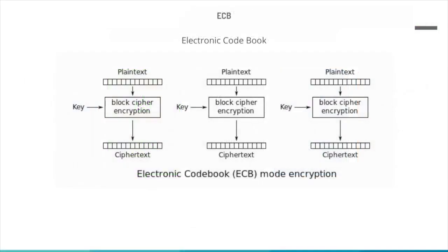AES ECB: The first mode is the simplest of all five modes. The figure shows the scheme where a block of plaintext is encrypted with the same key. The term 'codebook' is used because for a given key there is a unique ciphertext for each block of plaintext — imagine a gigantic codebook with an entry for every possible plaintext pattern showing its corresponding ciphertext.